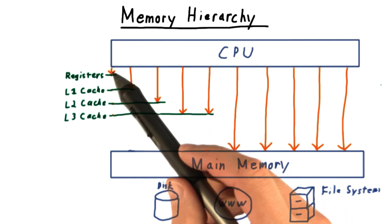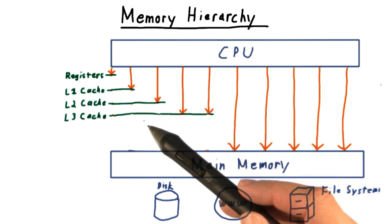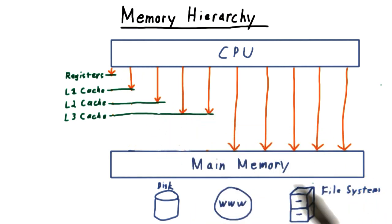Notice here that the top is smaller, faster, and costlier per byte. And as we go down the hierarchy, we get things that are bigger, slower, and cheaper per byte.